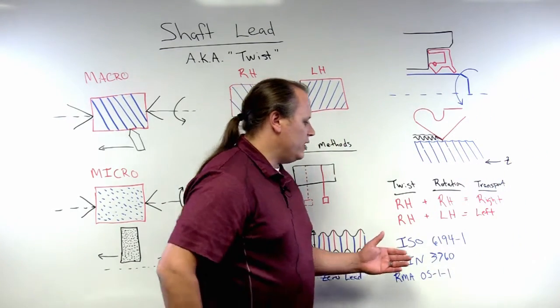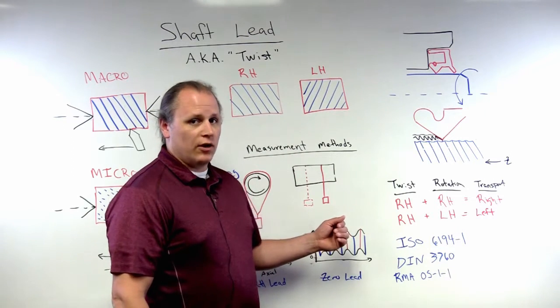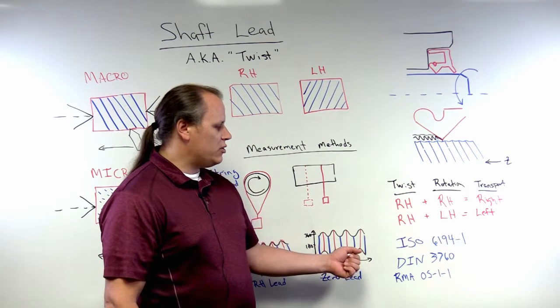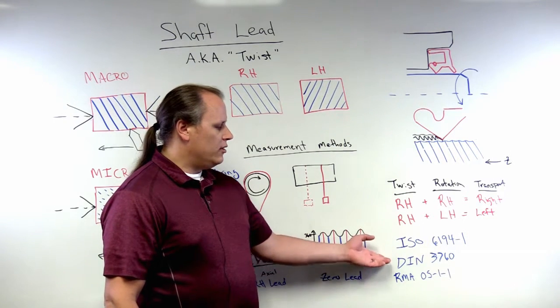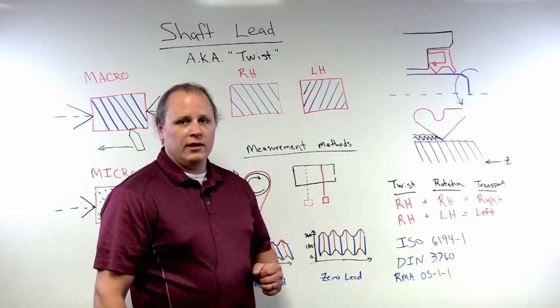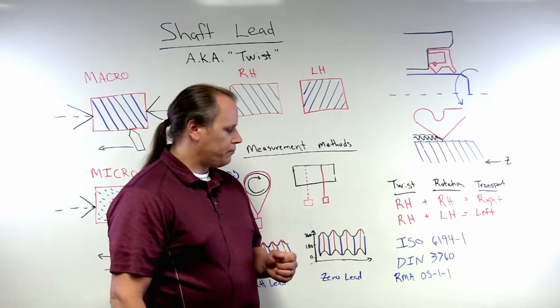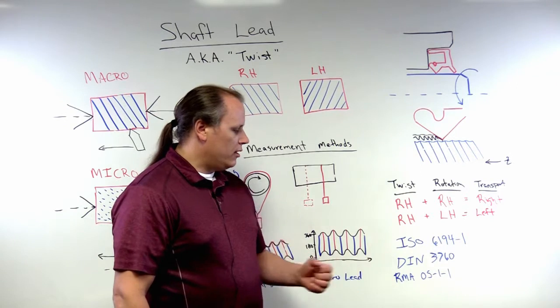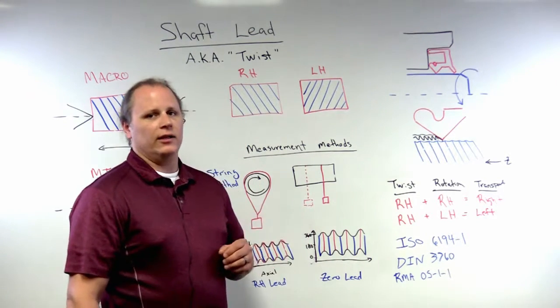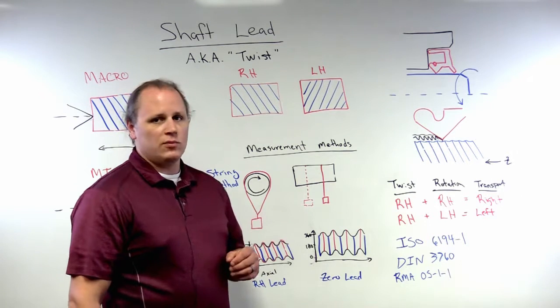Some of the specifications that exist and are used in the industry that you may see include ISO 6194-1 and DIN 3760, both of which specify zero lead. RMA OS-1-1 actually does tolerate lead to a very small level.